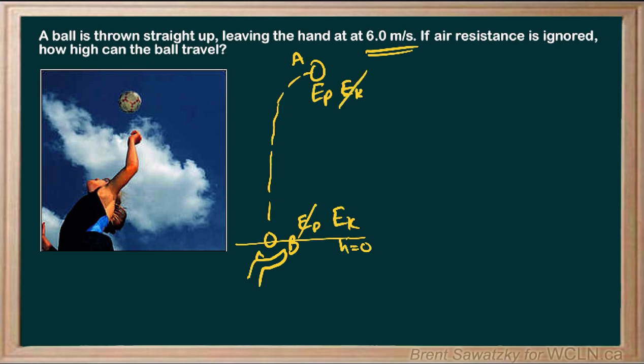We can visualize this from an equation point of view: energy before equals energy after. In the before we have kinetic energy and no potential energy; in the after we have potential energy and no kinetic energy. Another way to think of it is that all the kinetic energy is gradually converted into potential energy as the ball travels up, until all of it has become potential energy at the very top.